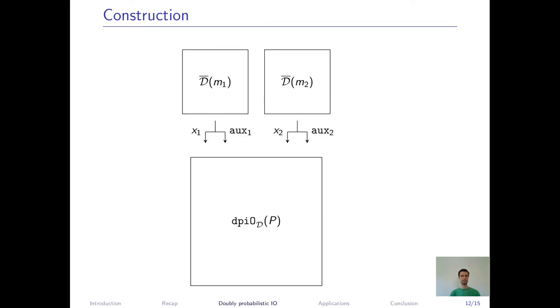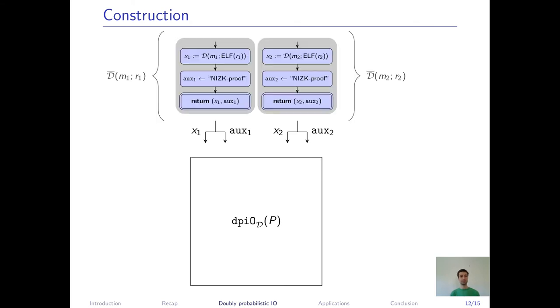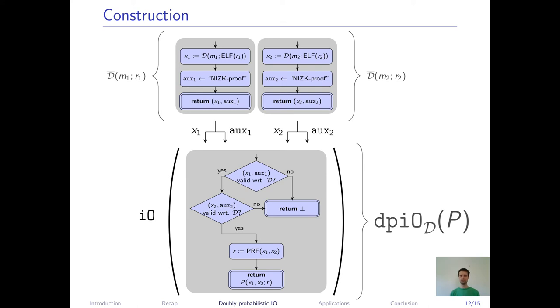Okay, how do we instantiate this with polynomial I.O. and extremely lossy functions? Given some input sampler D, the compiled input sampler looks as follows. Instead of sampling the Xi with D on uniform random coins, we preprocess these random coins with the extremely lossy function. Furthermore, the compiled input sampler produces a NIZK proof as auxiliary information, which proves that the Xi was computed with these ELF preprocessed random coins. And we do not need to obfuscate this compiled sampler, it's just redefined. We don't need to protect what is inside.